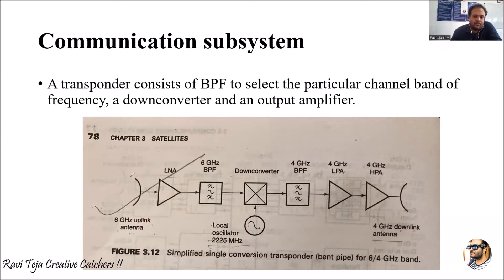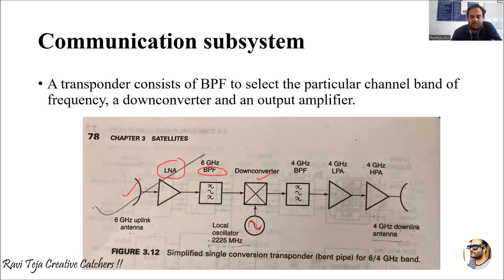The uplink antenna is connected to a low noise amplifier, which is again connected to a band pass filter of six gigahertz. That is connected to a down converter, which is connected with the help of a local oscillator. The down converted signal is then given to a four gigahertz band pass filter, which forwards it to a low power amplifier.